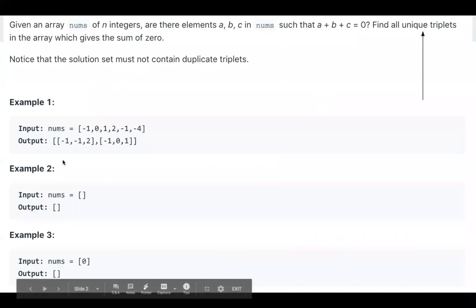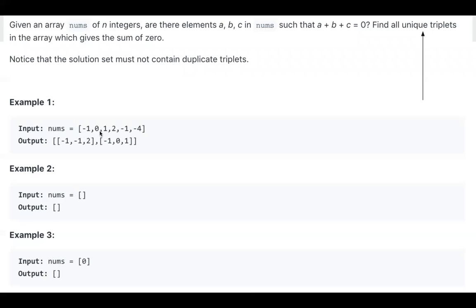For example, negative one, negative one, two is a valid triplet and negative one, zero, one is also a valid triplet. Note that there is another negative one, so this negative one, zero, one is also a valid triplet, but we need to return all unique triplets, so we should not contain duplicate triplets.